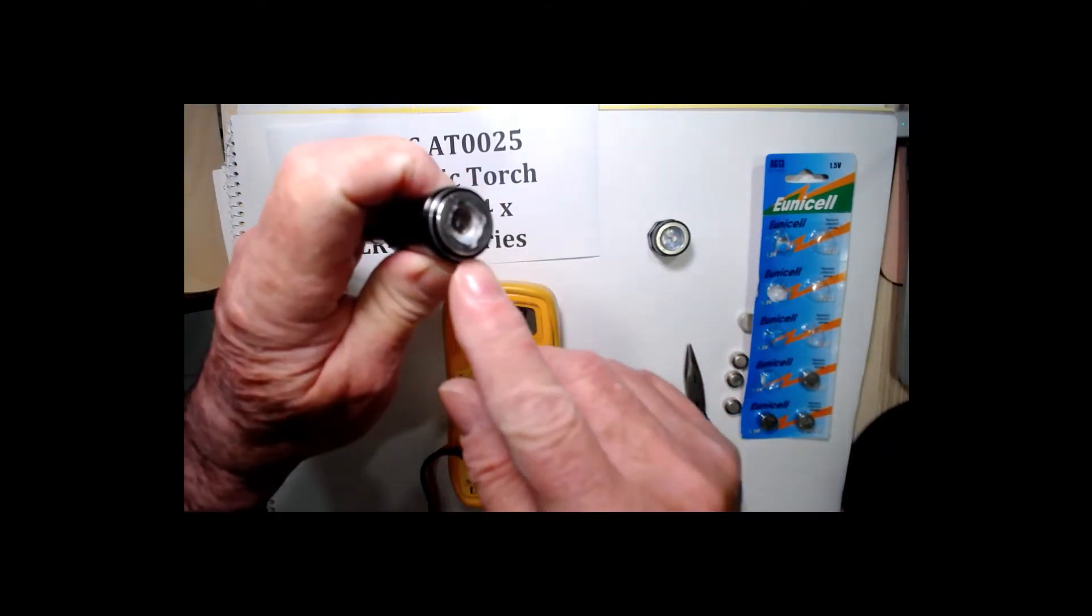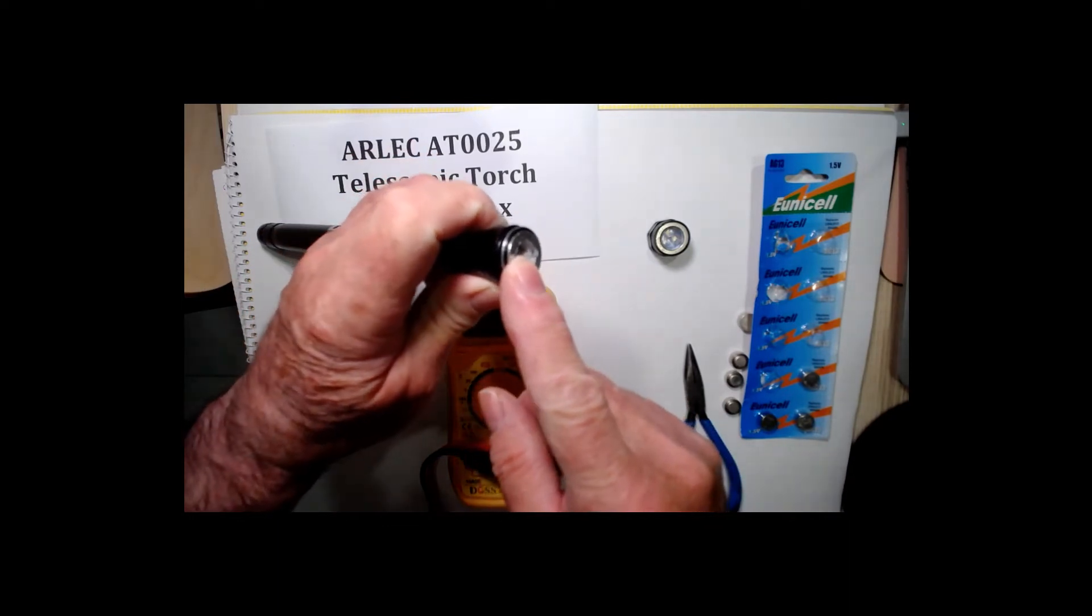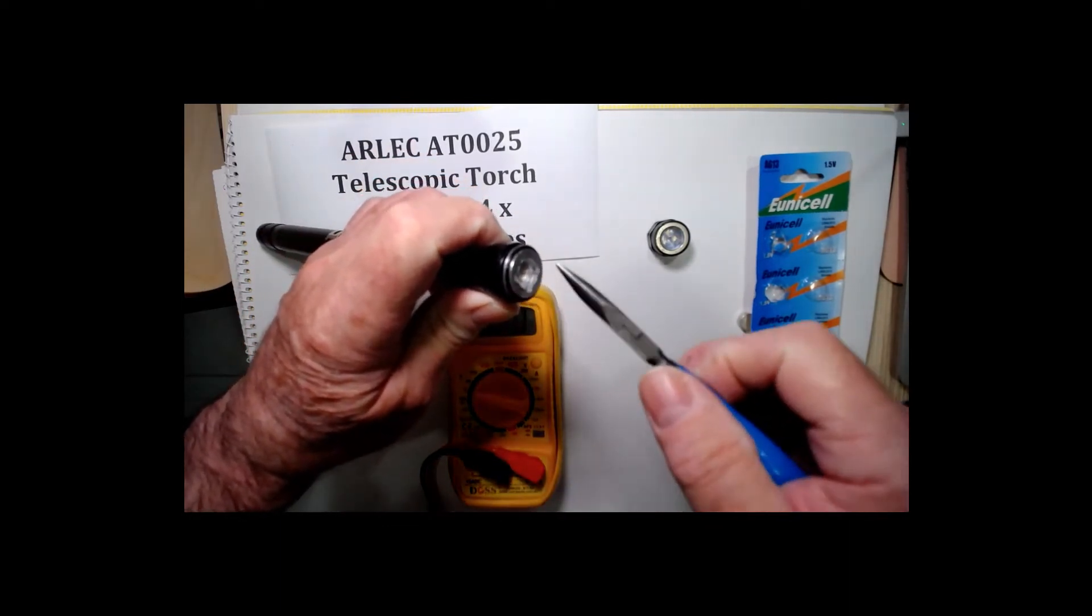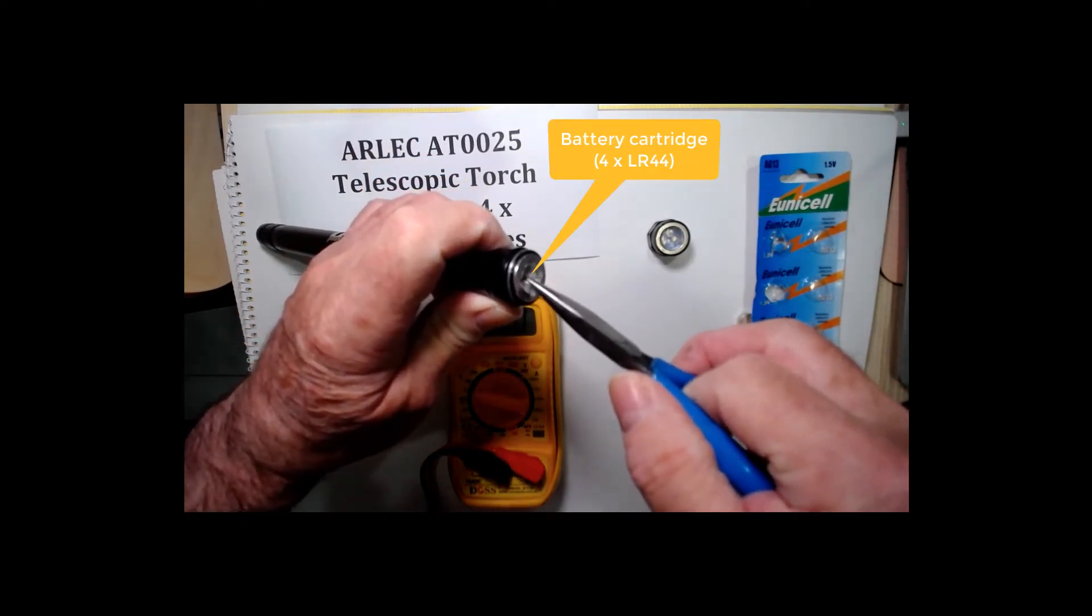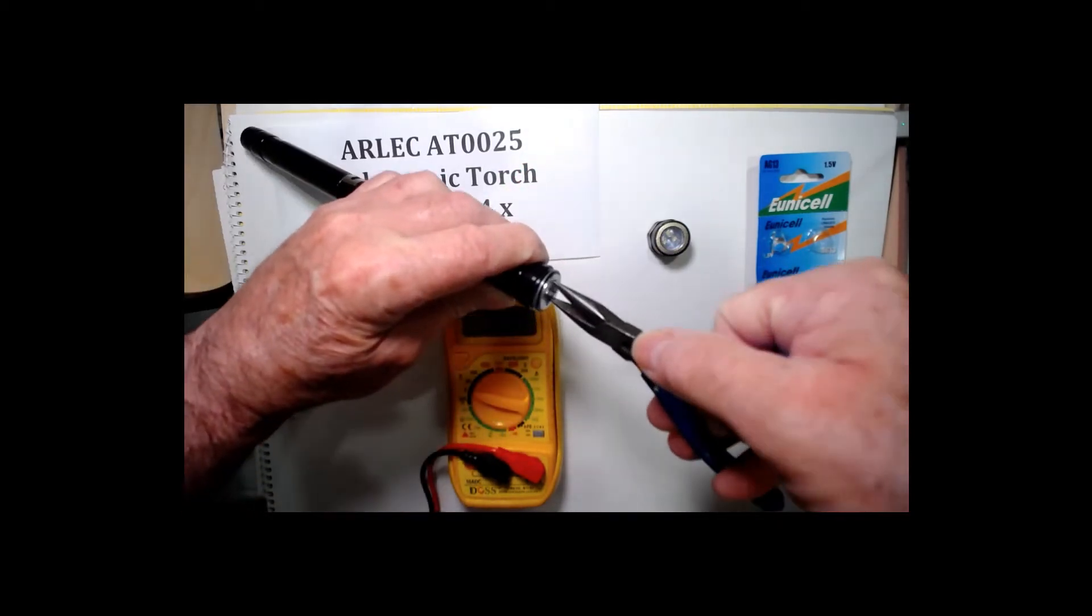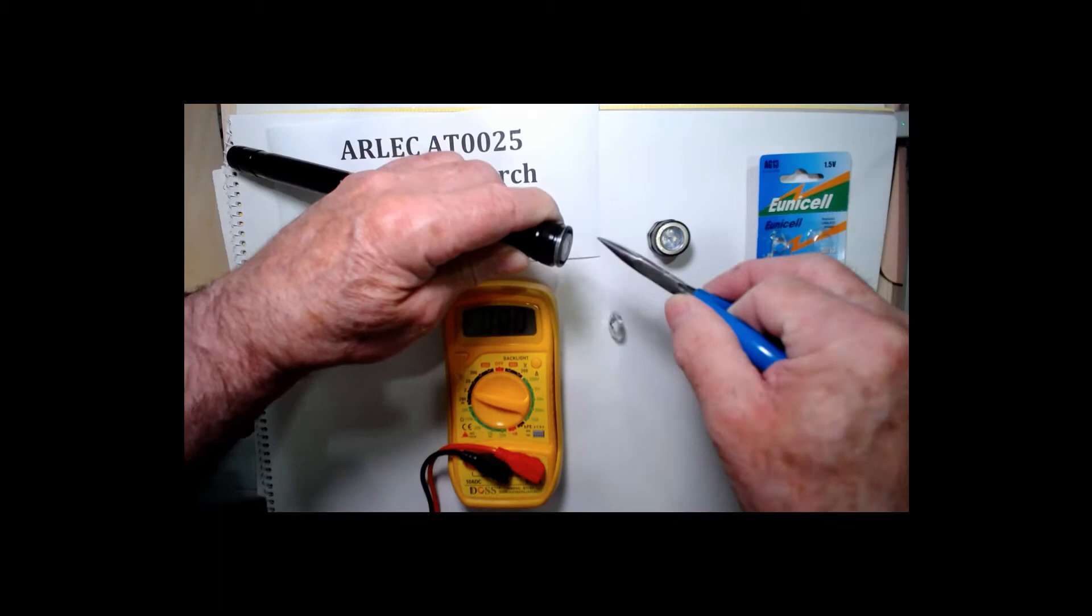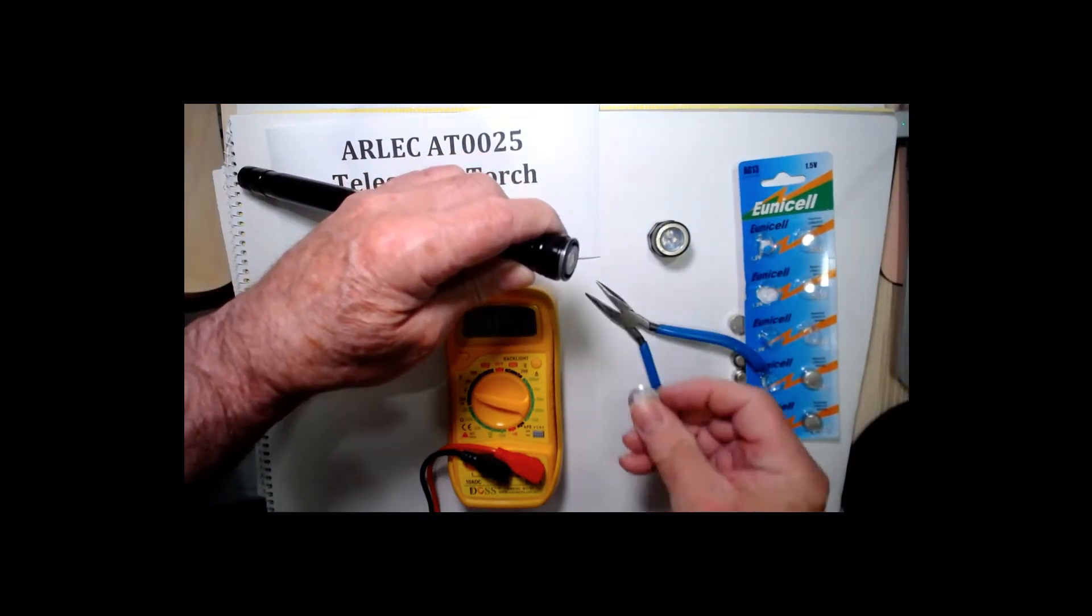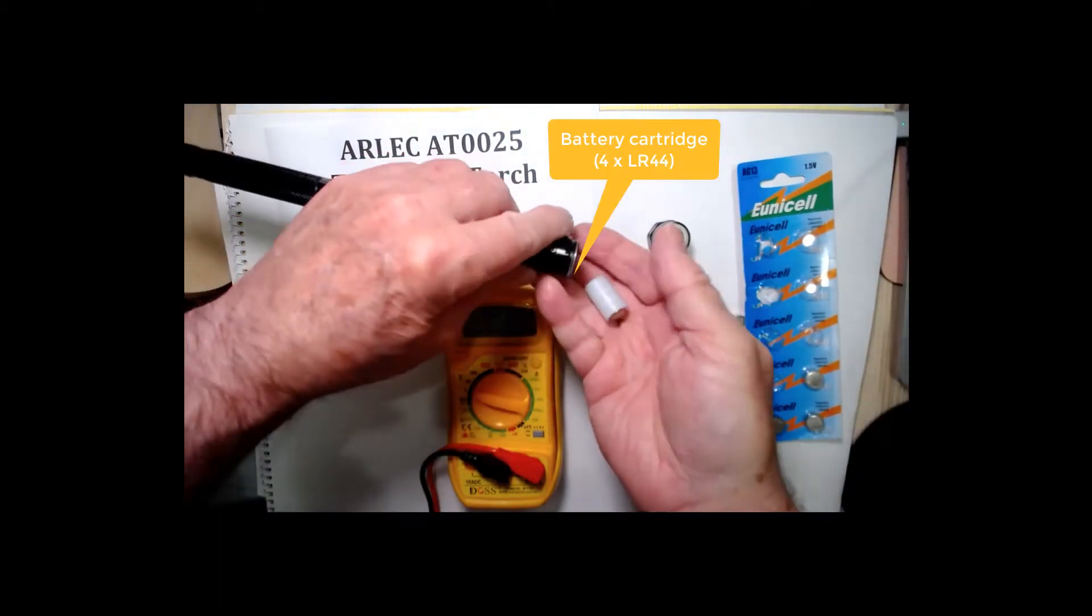You'll see here the top of the positive terminal of the battery. I was wondering how to get into this section but it turns out this top thread comes out and there's the cartridge with the four batteries.